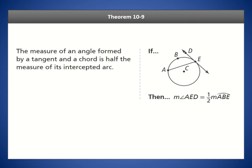Let's look at theorem 10.9: if you have a tangent line — which touches the circle at one point — and a chord, the angle between the chord and the tangent line behaves like an inscribed angle. So if the intercepted arc is 100 degrees, this angle is going to be half of that arc, which is 50 degrees. The angle between a tangent and a chord is half its intercepted arc, just like an inscribed angle.